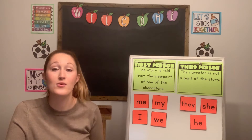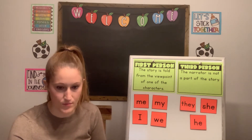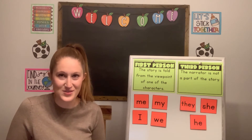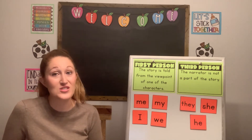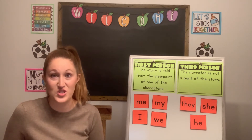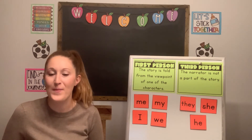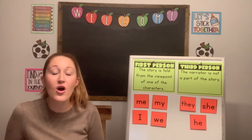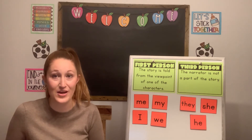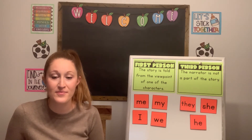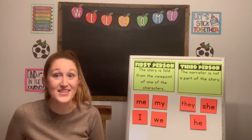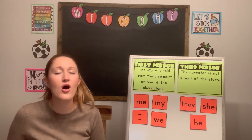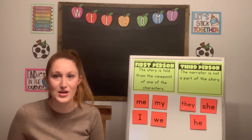Let's review the keywords quickly. With first-person, when told from the viewpoint of one character, we see words like me, my, I, and we. When it's third-person — the narrator not part of the story — we see words like they, she, and he. Now let's start with our first passage: 'Anna loved her new cat, Josie, so much that she wanted to take her to school.'